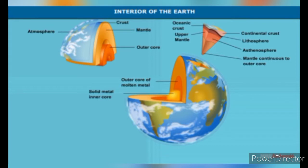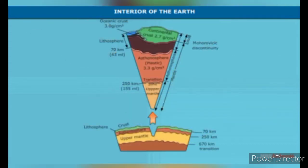The lower mantle is in a semi-molten condition. It extends towards the interior of the Earth to a distance of about 2,900 km. Beneath the mantle lies the core. The upper part of the core is said to be in liquid state, but most of the interior is solid.